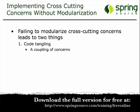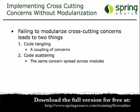Another problem that comes out of not modularizing those cross-cutting concerns is what's known as code scattering. If you don't modularize that security code or that logging code, that same security code and logging code will show up in lots of places in your application. That's known as code scattering. So, code tangling and code scattering are both things that you want to avoid, and modularizing your cross-cutting concerns will help you do exactly that.